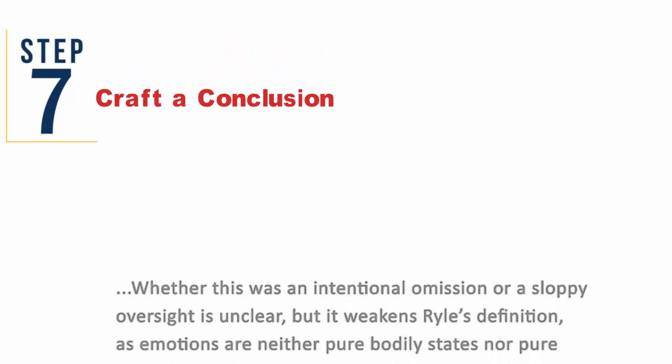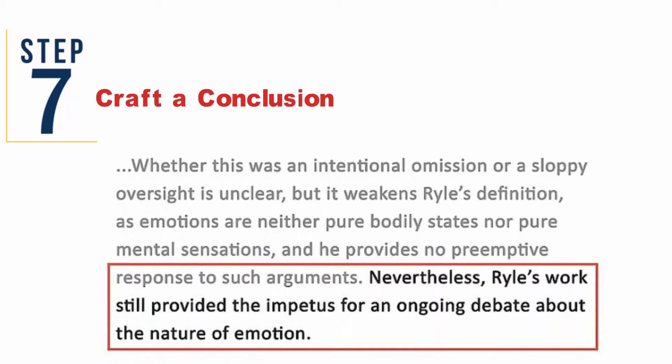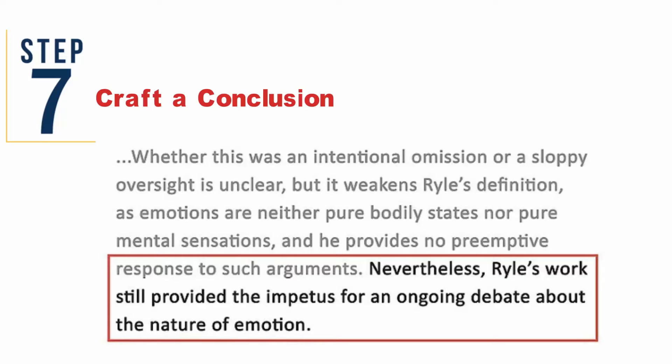Step 7: Craft a conclusion. In this section, revisit the critical points of your piece, your findings in the article, and your critique. Also, write about the accuracy, validity, and relevance of the results of the article review. Present a way forward for future research in the field of study.